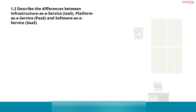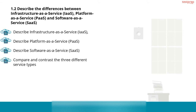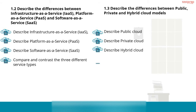Number 3: describe the differences between public, private, and hybrid cloud models. This contains four subtopics: describe public cloud, describe private cloud, describe hybrid cloud, and compare and contrast the three different cloud models. It is recommended to read the cloud deployment model's Microsoft documentation.